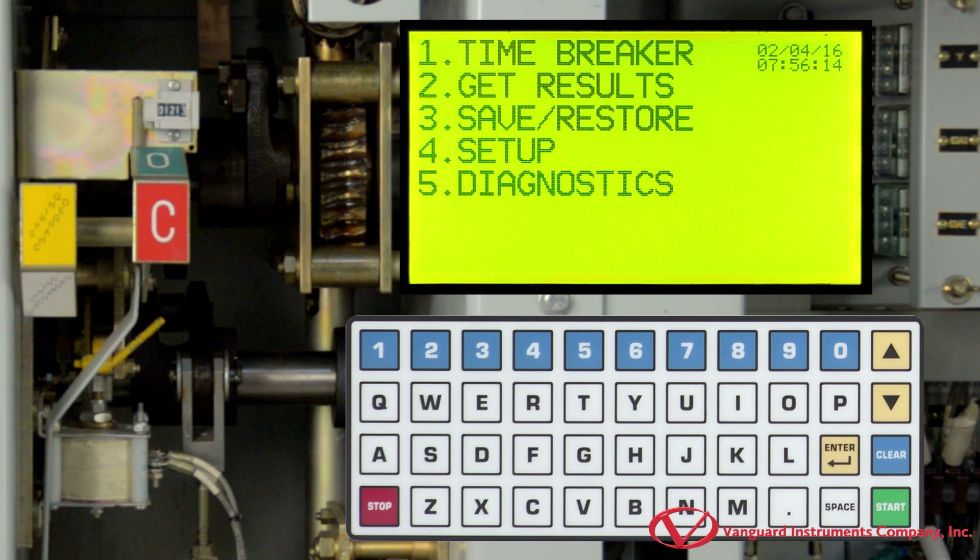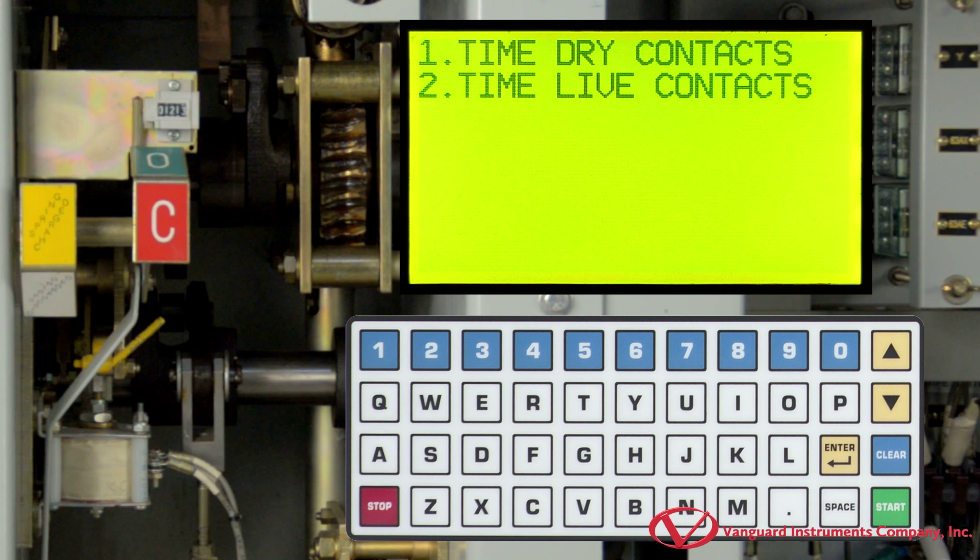To start performing a conventional timing test, we will select time breaker by pressing the 1 key. Now, we will press the 1 key to select time dry contacts.